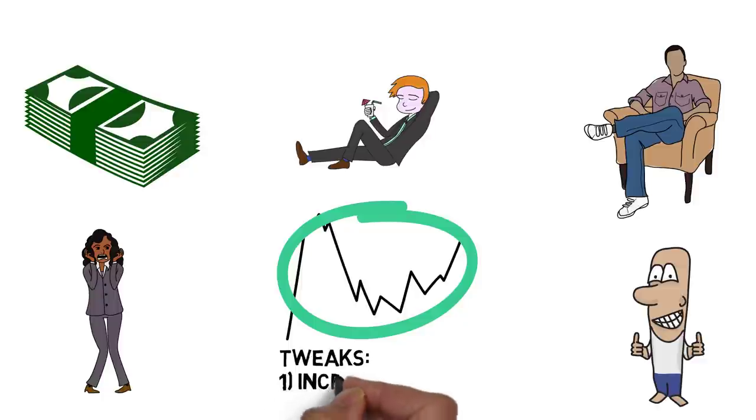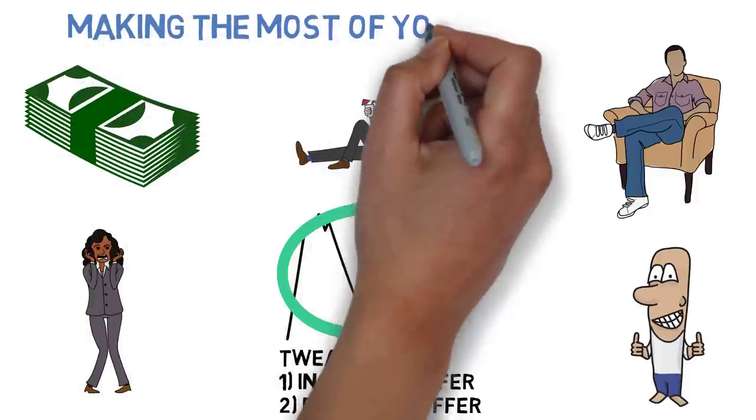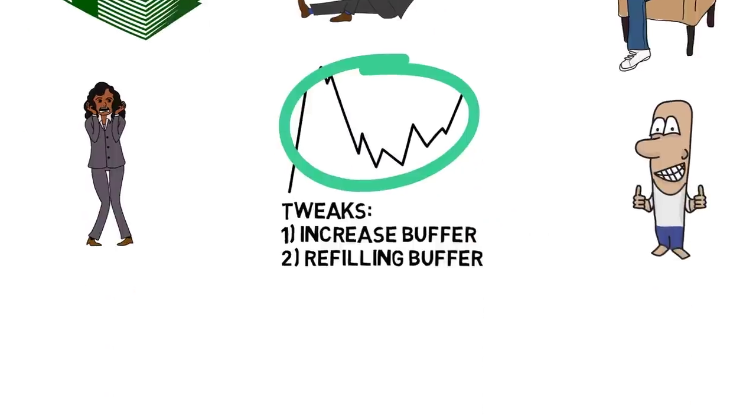The tweaks we'll be looking at today are increasing the size of the cash buffer to see how much of a difference it makes and if there's a point of diminishing returns, and also refilling the cash buffer after using it the first time to get through a down market. Let's get started.